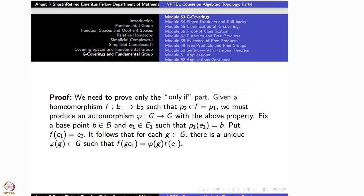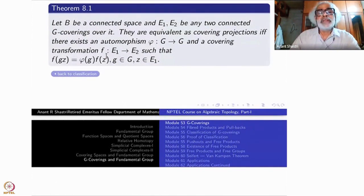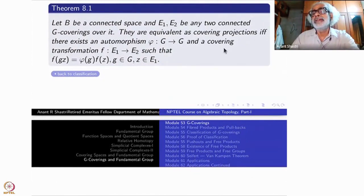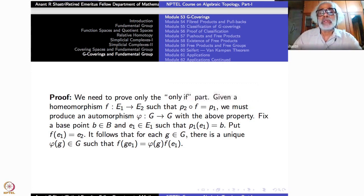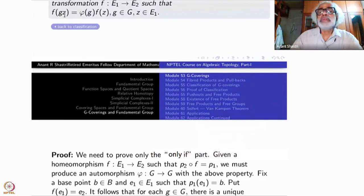Obviously we have to prove only the 'only if' part here. Once the 'if' part is satisfied, it is already a covering transformation. So just start with a covering transformation and produce φ — that is the part to prove. Given a homeomorphism f from E₁ to E₂ such that P₂ composite f equals P₁, we must produce an automorphism φ from G to G with the property that f(g·z) = φ(g)·f(z).